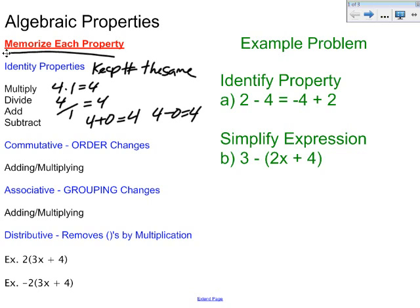The next one is the commutative property. Keep in mind this only works for adding and multiplying. In this case what we're doing is you've got to remember the commutative is the order changes. So if you look at that particular problem, it goes 2, 3, then 3, then 2.